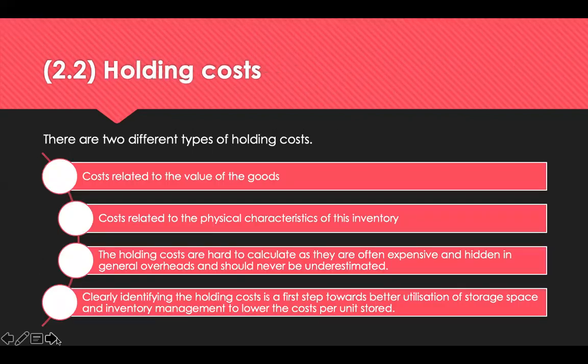Holding and carrying costs are costs associated with the storage and handling of inventory. There are two categories: the value of the stock and inventory, and the physical characteristics. The value-based financial costs include interest on the working capital tied up in stock, insurance, and the cost of losses due to product deterioration, obsolescence, redundancy, theft, or accidental damage.